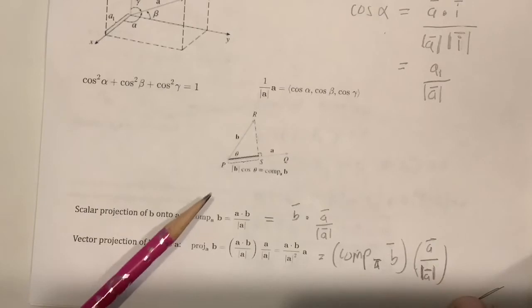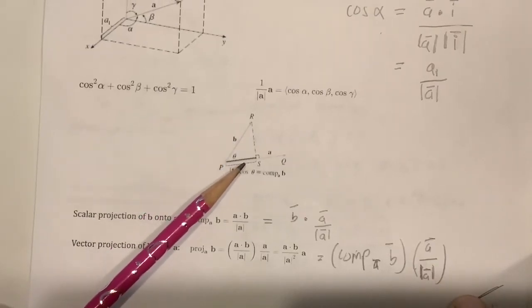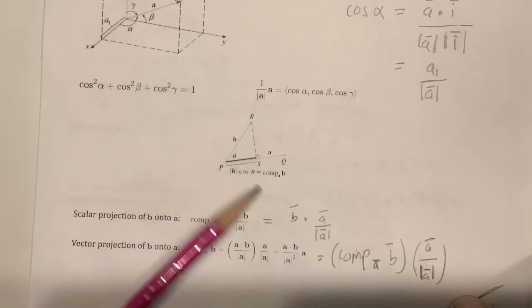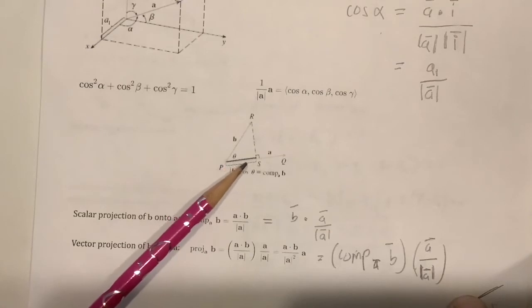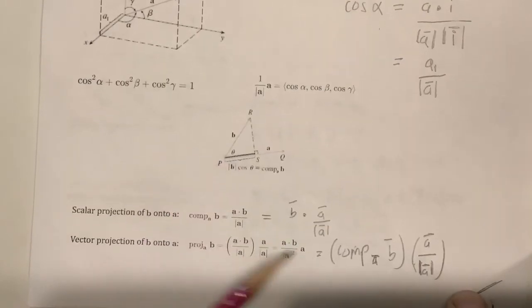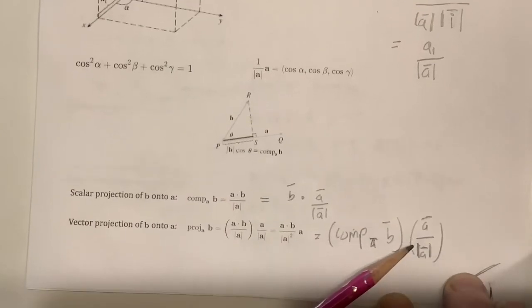We talked about the component of b in the direction of a. That tells you how much a vector of b is in the direction of another vector a, can be thought of as b dotted with the unit vector in the direction of a. And then if you want to turn that distance into a vector, that's called the projection of b onto a, you just got to multiply the unit vector in the direction of a by the component of b in the direction of a.